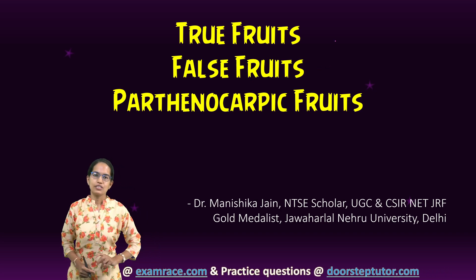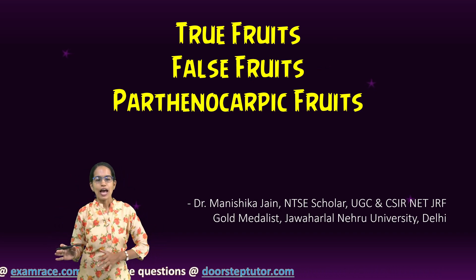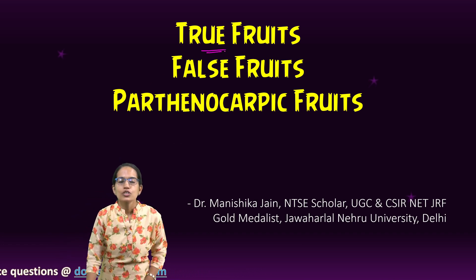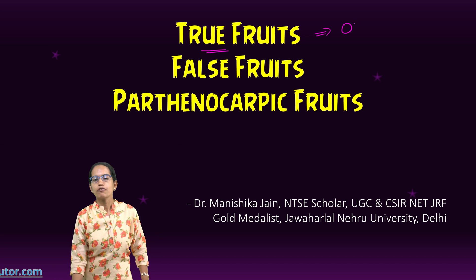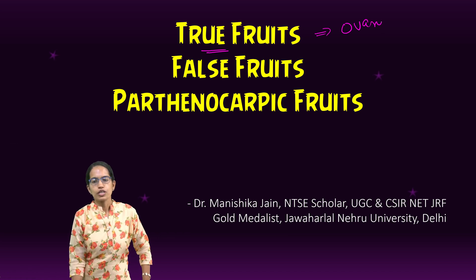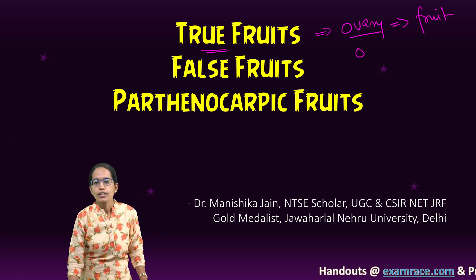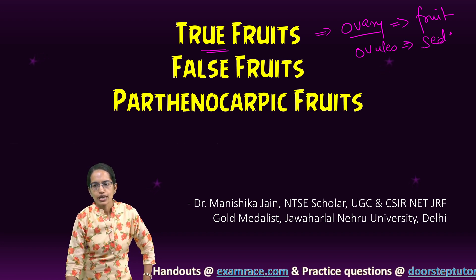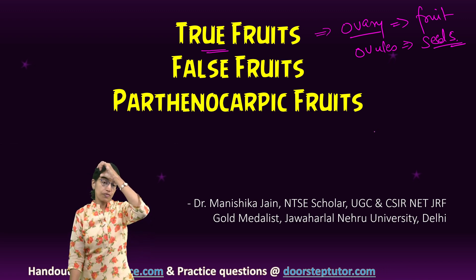Let's understand the difference between a true fruit, false fruit, and parthenocarpic fruit. To begin with, a true fruit is a fruit which is converted from the ovary. As we know, the ovary transforms into the fruit and ovules transform into seeds. In the case of true fruits, that's exactly what we have.